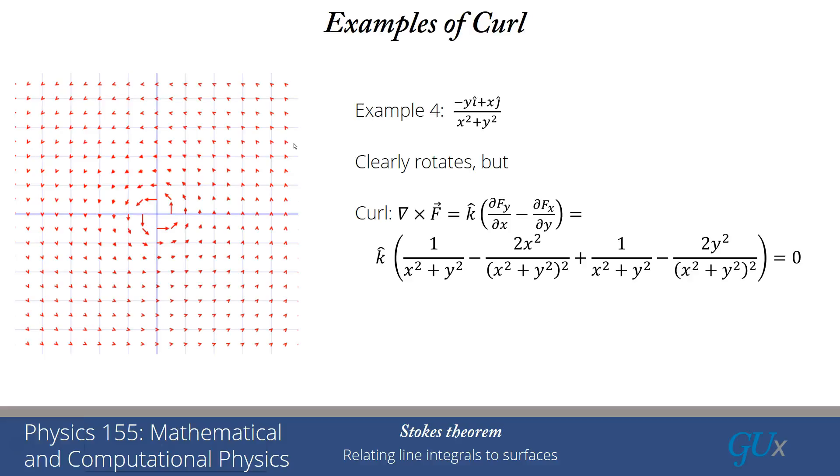Now, I want to do the same thing in the y direction. When I take dfx by dy, that has a minus y over x squared plus y squared, but the curl has a minus sign in the definition. So when I take the derivative of that with respect to y, I end up with 1 over x squared plus y squared. And then when I take a derivative of the denominator, it ends up being minus 2y squared over x squared plus y squared quantity squared.